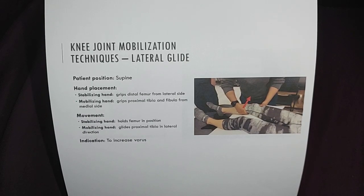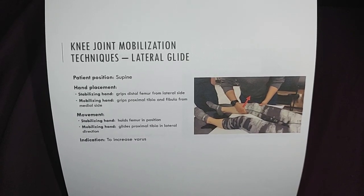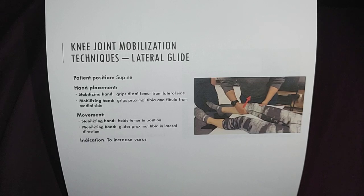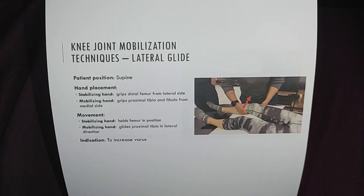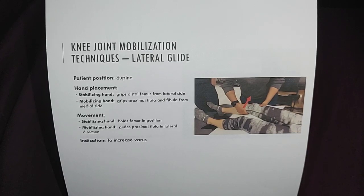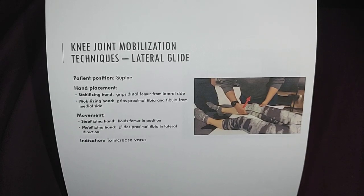Lateral glide: the patient is positioned in a supine position. For hand placement, the stabilizing hand grips the distal femur from the lateral side. The mobilizing hand grips the proximal tibia and fibula from the medial side.